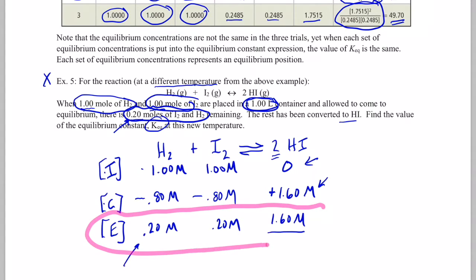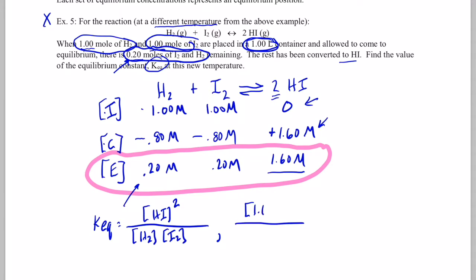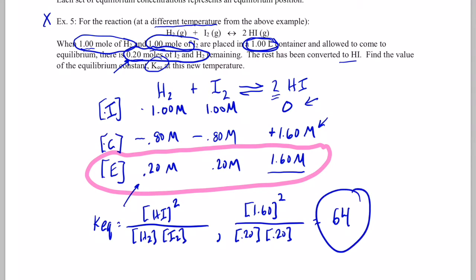The E row has the equilibrium concentrations I need for my equilibrium expression. Keq equals [HI]² over [H2][I2]. Plugging in values: [HI] at equilibrium is 1.60 mol/L, squared; [H2] is 0.20 mol/L; [I2] is 0.20 mol/L. Using the calculator: 1.6 squared, divided by 0.2, divided by 0.2. I get an equilibrium constant of 64 at this new temperature.